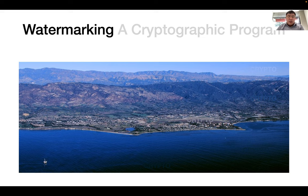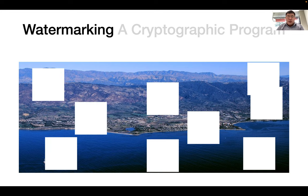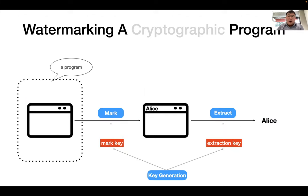A watermarking scheme can embed some information into a digital object without changing it too much, and it will be hard to remove the embedded information without destroying the watermarked object. In this topic, we consider watermarking schemes for programs — that is, the watermarked object is a program.